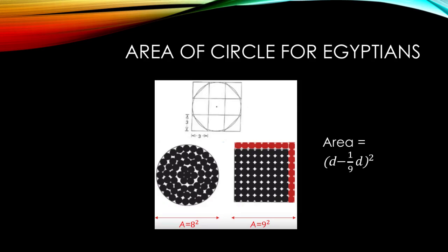So for the square, the side is 9, which means that the area is 9 squared.